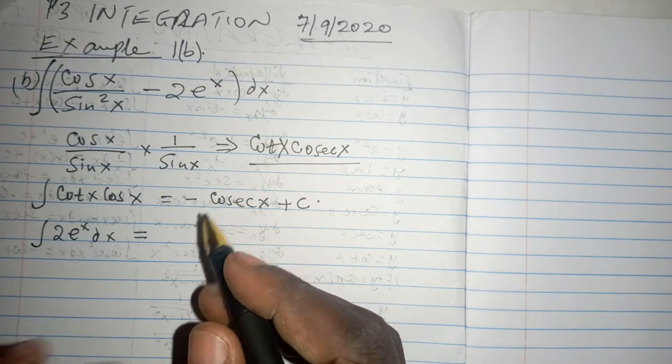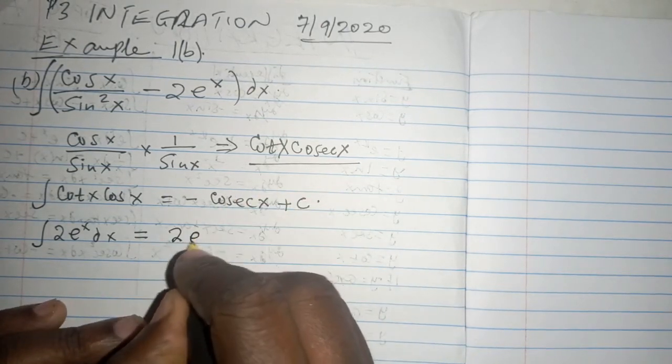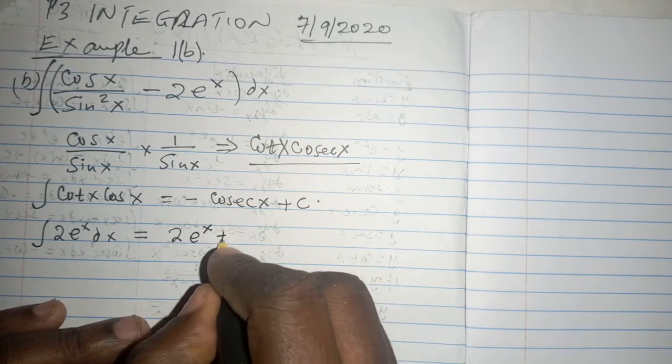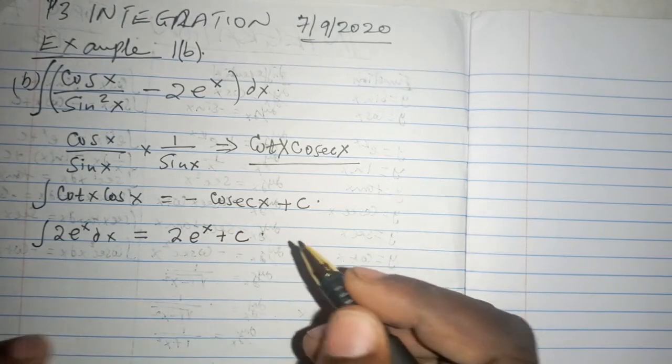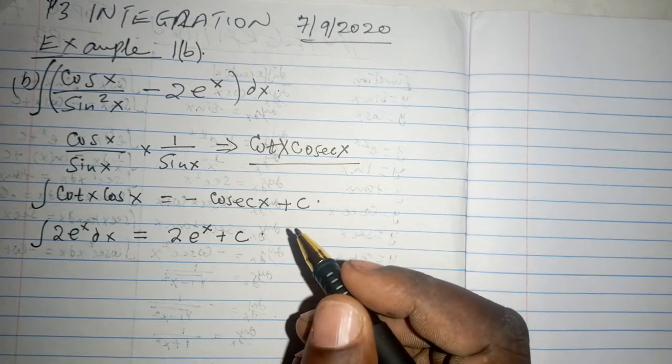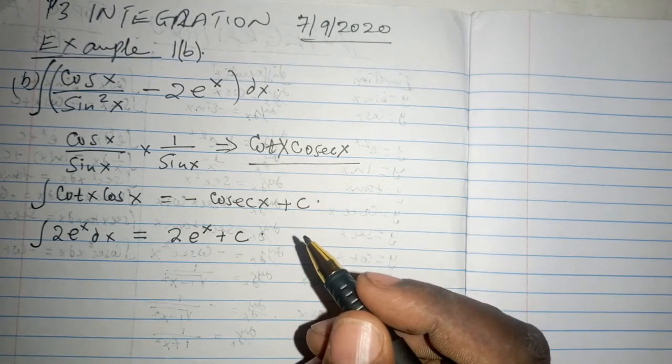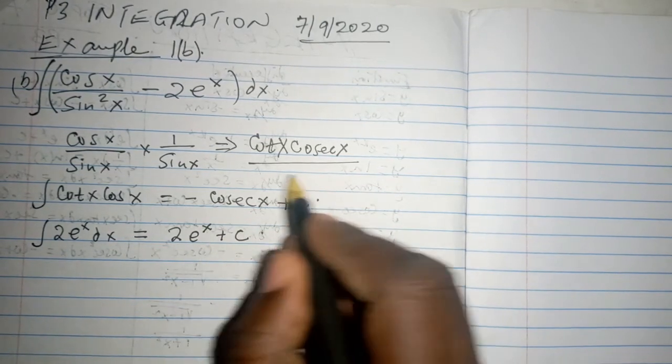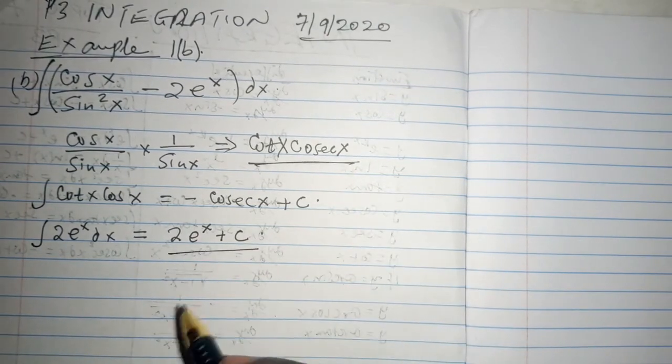So the integral of this part now, 2e raised to power x is simply 2e raised to power x plus a constant c. So if you ask me, then we have done with our polynomial integration. We have this part and we have this part.